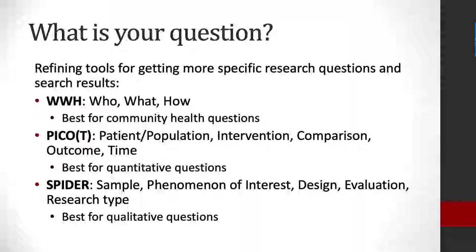There are three search strategies I'll briefly mention. There's WWH, which stands for who, what, and how. This is the one I'll be showing in greater detail on the next slide, and it can be particularly helpful for community health questions. Another that your instructor may show you is PICO — sometimes with the optional T — which stands for patient population, intervention, comparison, outcome, and sometimes time. This tends to be a really good strategy for quantitative questions as well as evidence-based medicine and clinical queries.